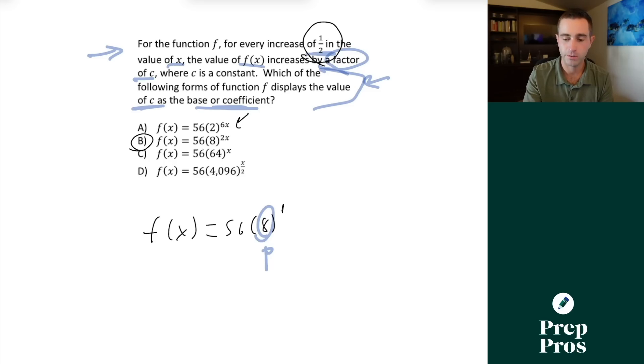Now one sneaky thing that helps this click with students sometimes is these are actually all equivalent functions. If we plugged one in for x in a, we'd get two to the third, that would be eight. One 64 to the one half power is going to be eight. 4096 to the one quarter power is also going to be eight, but we just need to pick the one where it's already being shown to us, which in this case means we just need to raise it to the first power.